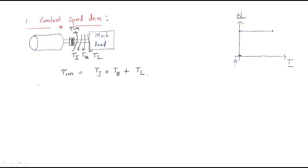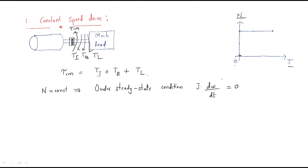Under steady state condition — meaning the motor is running, not starting — the speed is constant. This means J·dω/dt becomes zero, so the inertia torque becomes zero. Then the electromagnetic torque equation reduces to: T_e = B·ω + T_L, where B·ω is the frictional torque and T_L is the load torque.